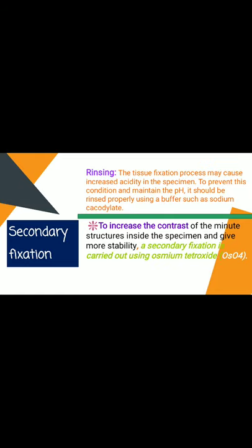The next step is rinsing: the tissue fixation process may cause increased acidity in the specimen. To prevent this and maintain pH, it should be rinsed properly using a buffer such as sodium cacodylate. Next, a secondary fixation is performed to increase the contrast of minute structures inside the specimen and give more stability. This is usually carried out using osmium tetroxide.